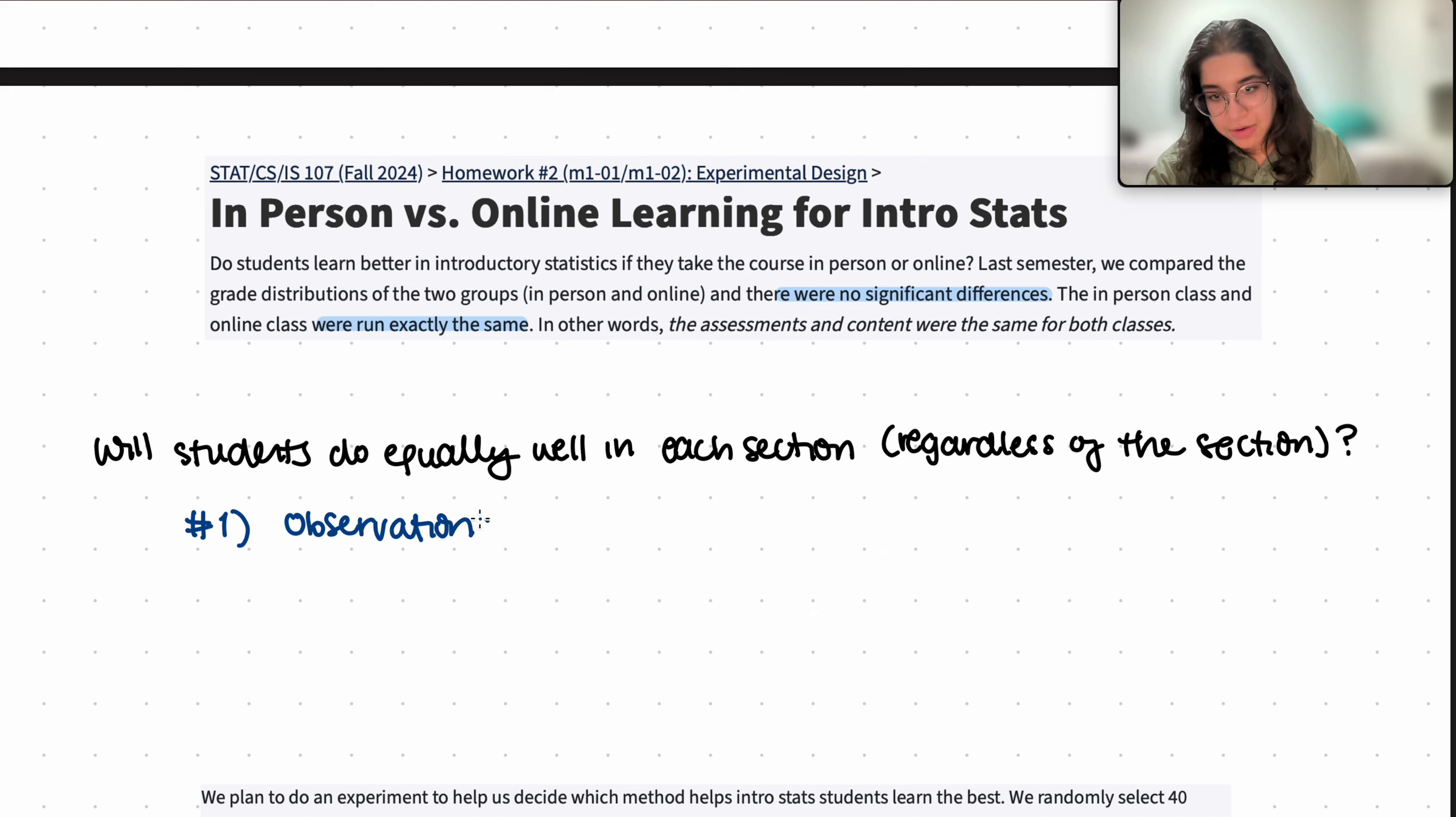The number one thing to identify here is that this is really an observational study. How do we know that? Well, in an observational study the subjects, or the people who are involved, get to choose which group they're essentially in. So when you register for a course you have the choice to pick if you want to be in an in-person course or an online course.